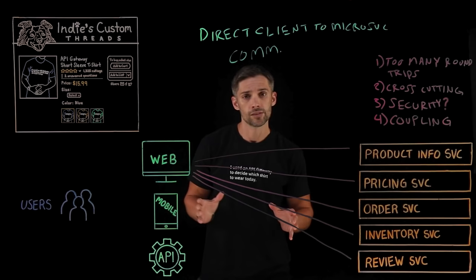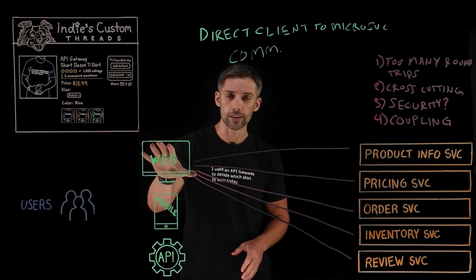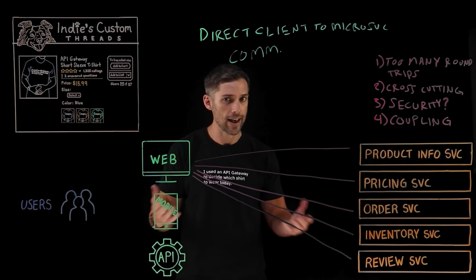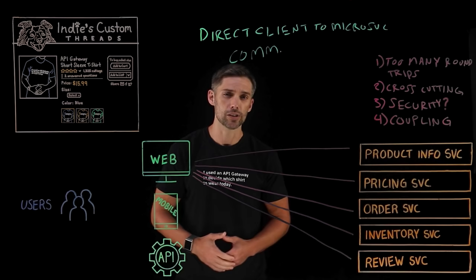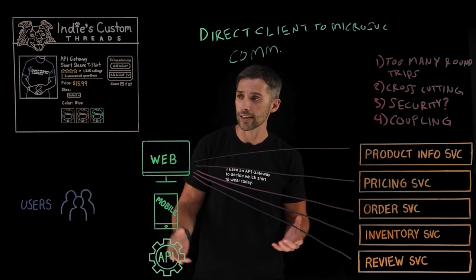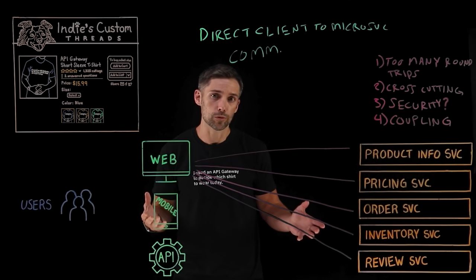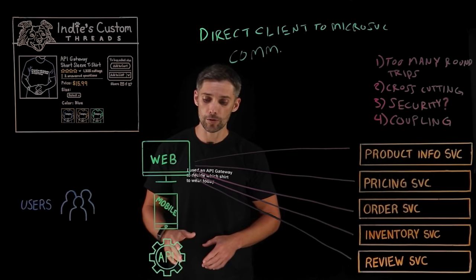We'd have our users making purchases and browsing t-shirts through different clients — a web application using a standard web browser, a mobile client on iOS or Android, and a third-party API integration service. For example, we have a review API integrated through a third-party, so a user could comment that the t-shirt fit comfortably but the 50% polyester gave them a bad skin rash.